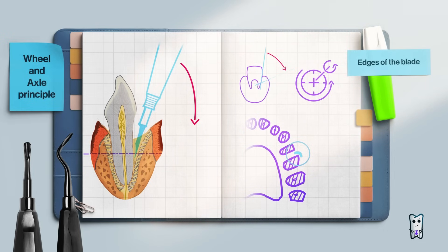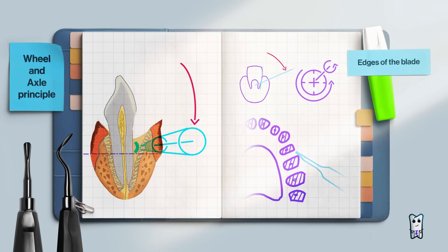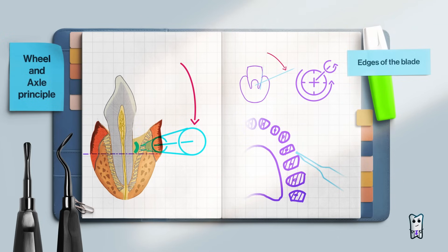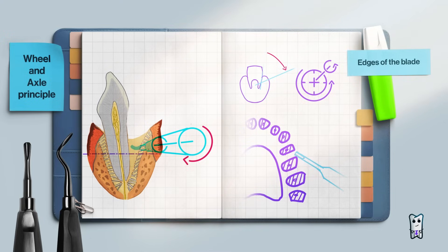The concave part of the blade rests against the root surface and the convex part lies against the wall of the alveolus. By moving the elevator in an oblique position relative to the long axis of the tooth, the blade of the elevator is placed in such position to the root surface. By rotating the elevator around its long axis, we can luxate the tooth.